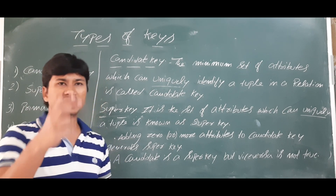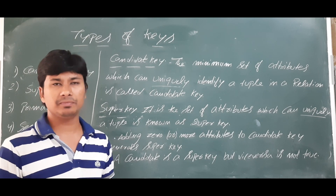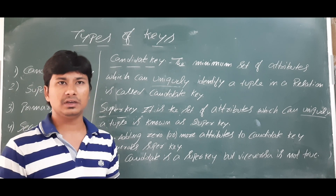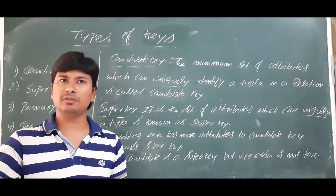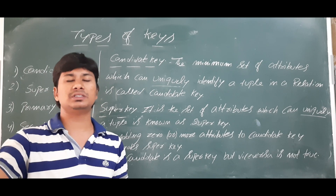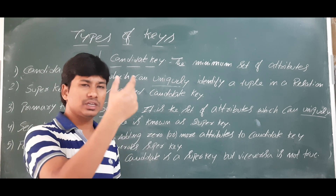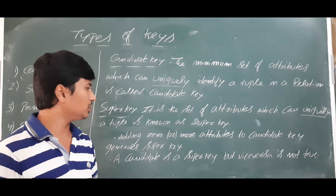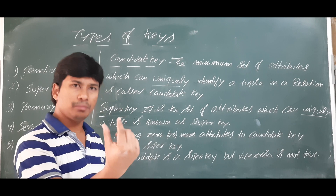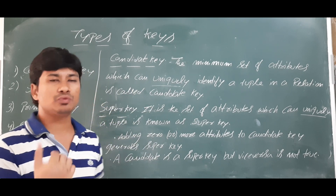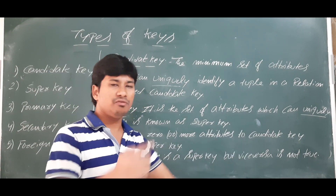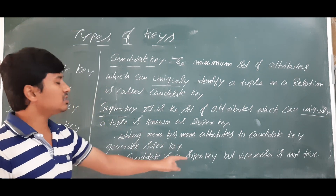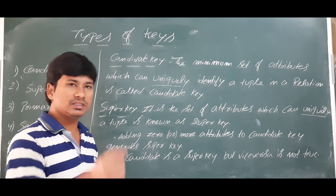To elaborate: if I can uniquely identify a student using their roll number, and I also add their name — say 'roll number 1, Ravi' — only one person will respond. If I say 'Ravi' alone, more than one person can answer. So roll number combined with name acts as a super key — I'm adding another attribute to the candidate key to form a super key.